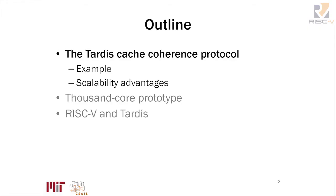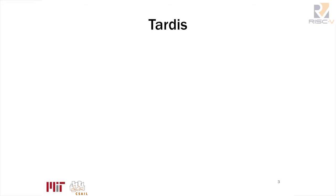To address this scalability issue, we've created TARDIS, a new cache coherence protocol. Throughout this talk I'll go through a brief example of how that protocol works and explain its scalability advantages. After that, we'll make the case for a thousand-core prototype and see how RISC-V fits into all of this.